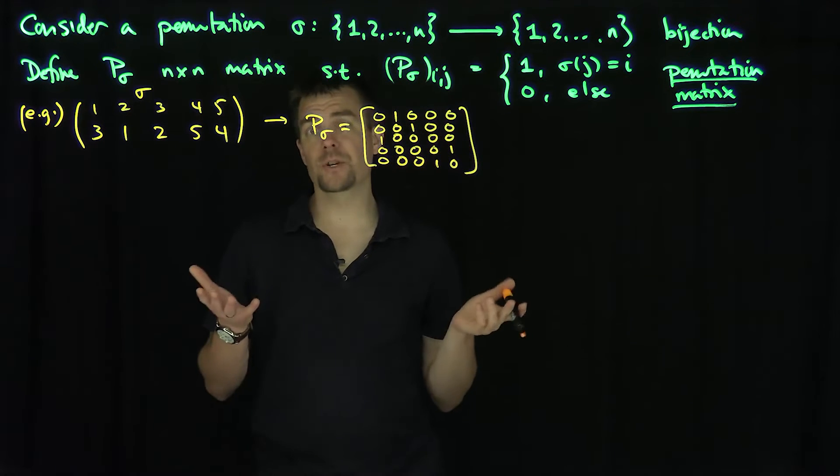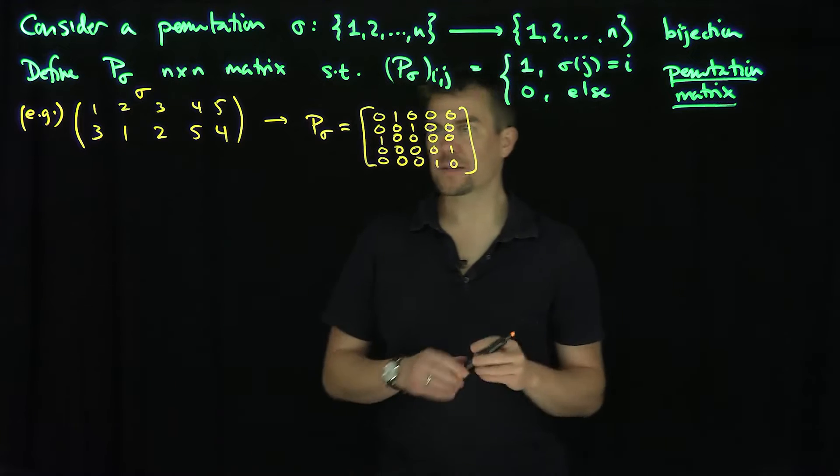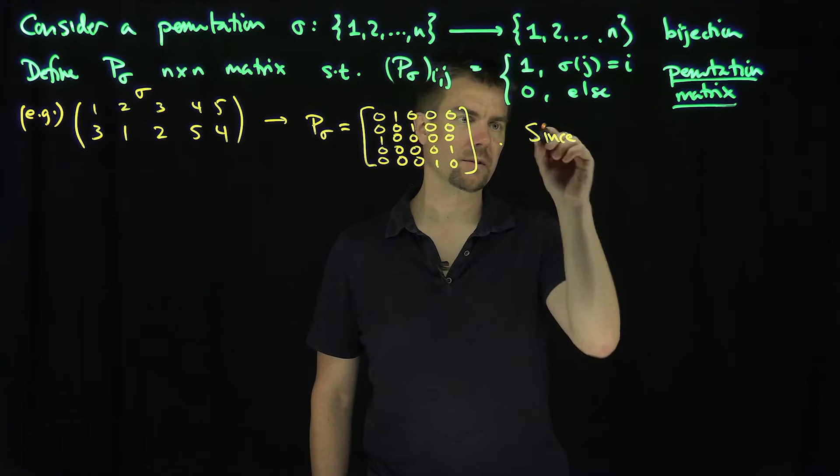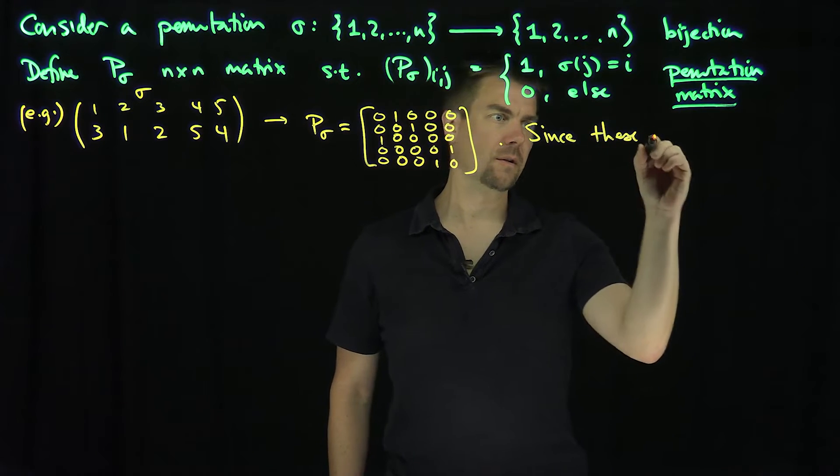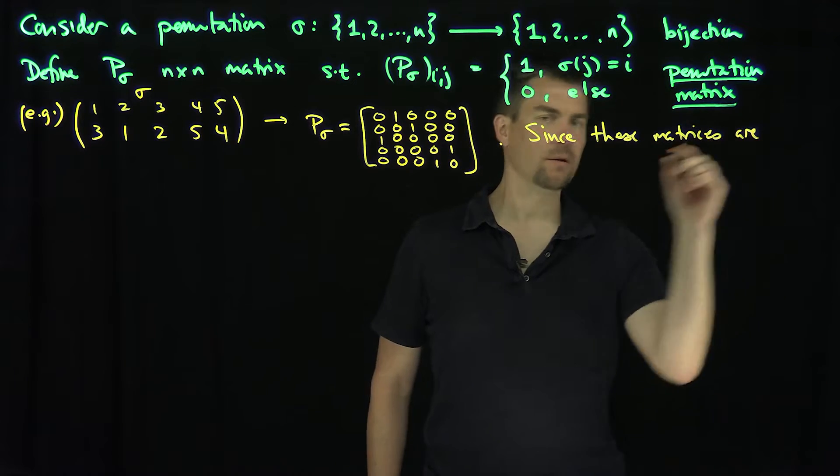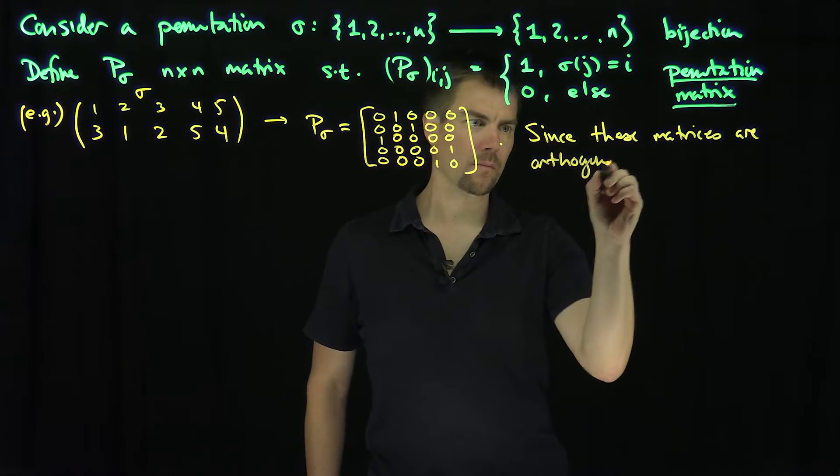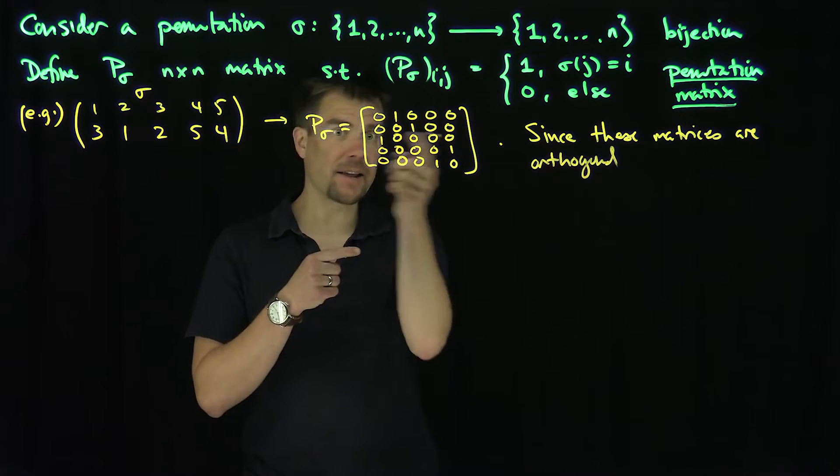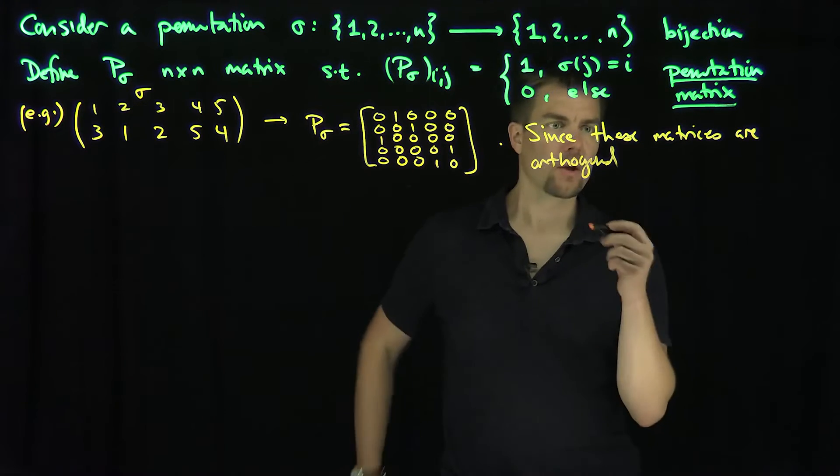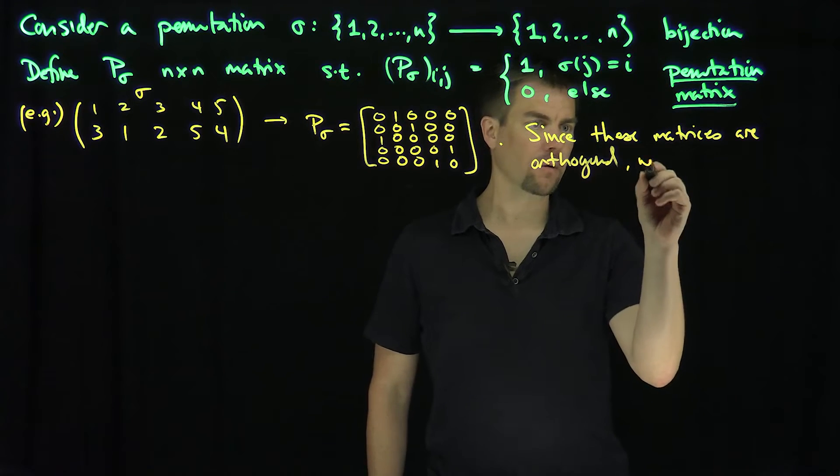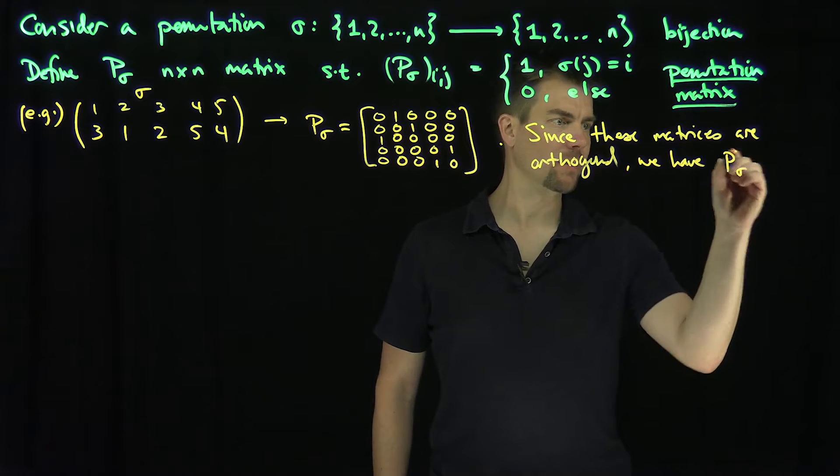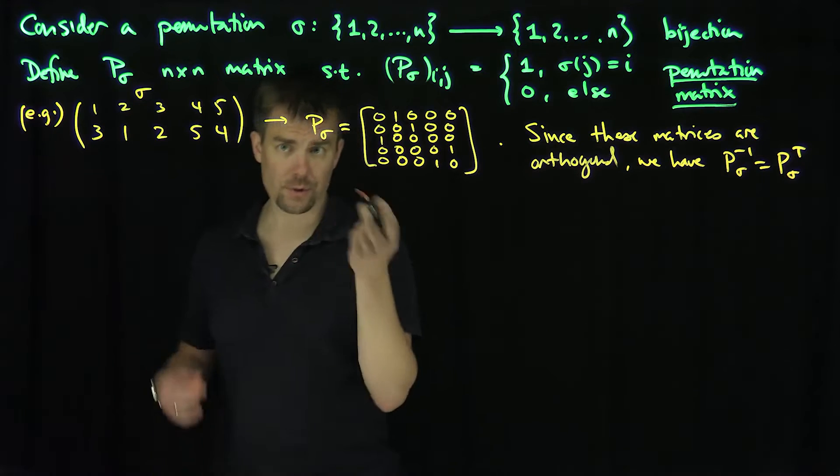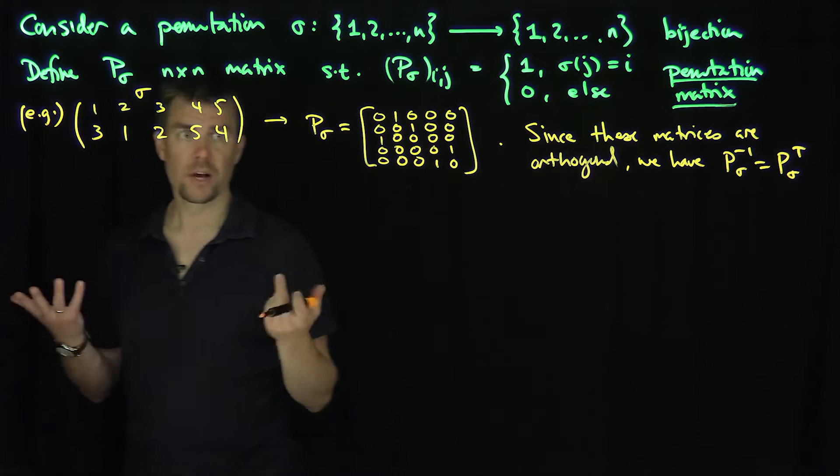Now let's make some observations about these permutation matrices. One observation we can make is that these permutation matrices are orthogonal matrices. We can easily see that because we just have a rearrangement of e_i hat in any of the columns, and those e_i's are perpendicular to each other. Since they're orthogonal, we have P_sigma inverse is P_sigma transpose. So they're all invertible, and their inverses are given by their transpose. That's beautiful.